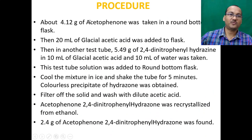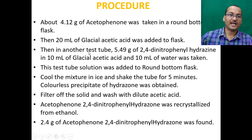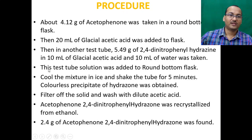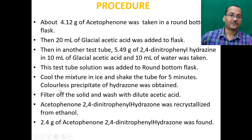For the procedure, about 4.12 grams of acetophenone was taken in a round-bottom flask. Then 20 ml of glacial acetic acid was added to the flask. In another test tube, 5.49 grams of 2,4-dinitrophenylhydrazine in 10 ml of glacial acetic acid and 10 ml of water was taken. This solution was then added to the round-bottom flask. The mixture was cooled in ice and shaken for 5 minutes, yielding a colorless precipitate of the hydrazone.